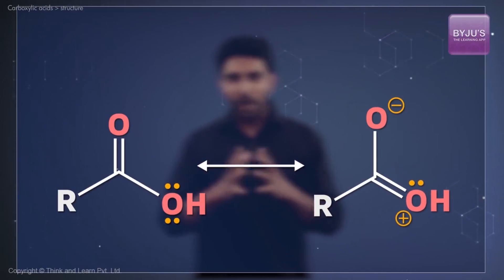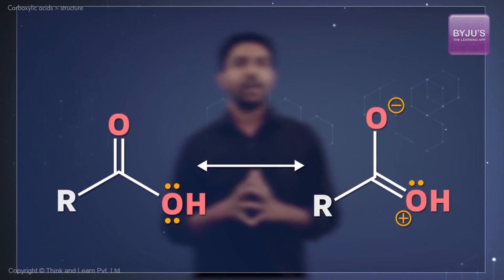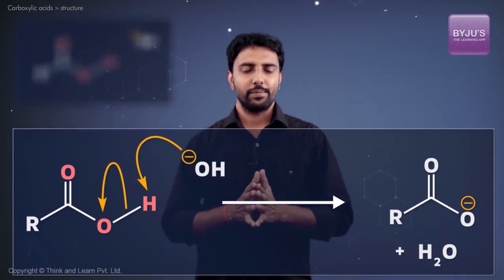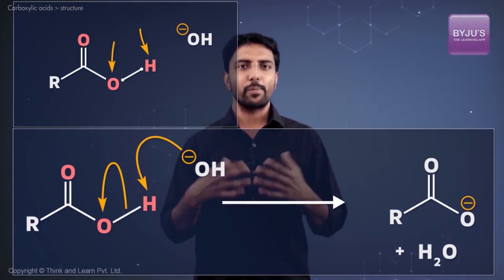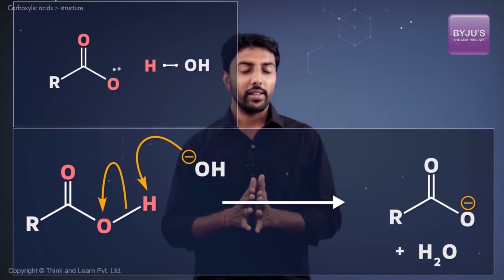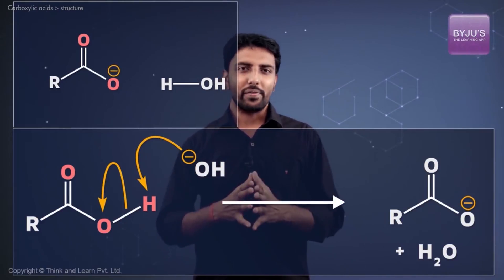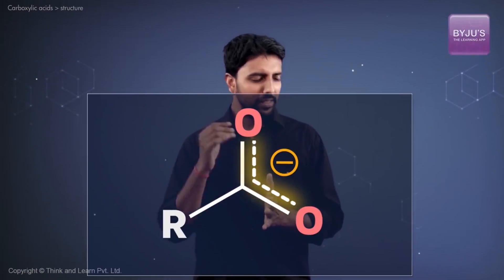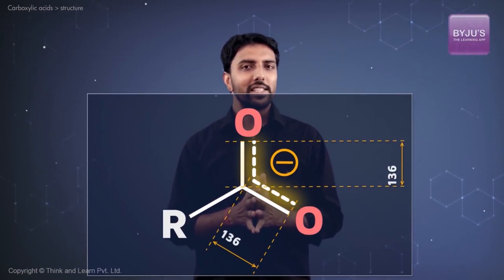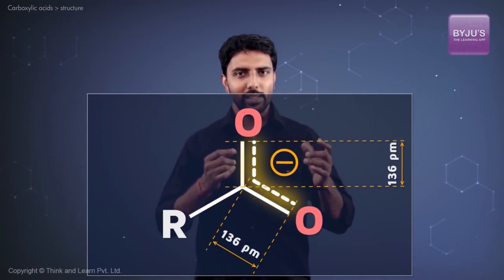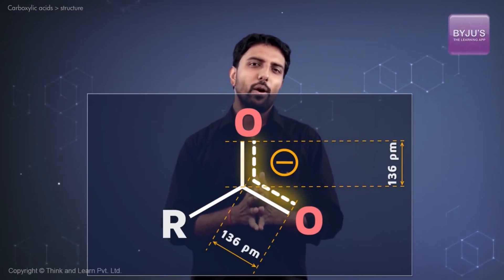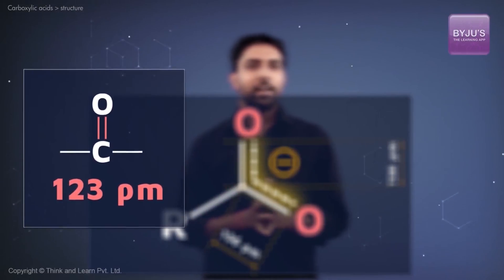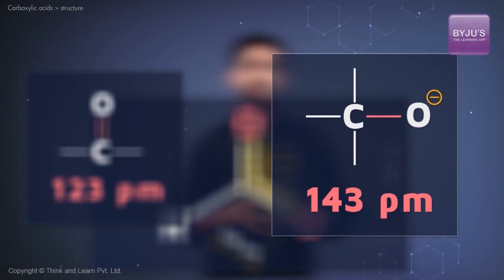In fact, this is why carboxylic acids behave like acids in the first place. Take a look at this acid-base reaction. When the acid loses its proton, we get water and the carboxylate ion. X-ray crystallography reveals that both the carbon-oxygen bond lengths in this anion are equal at 136 picometers. This value is bang in the middle of what would be an oxygen-carbon double bond at 123 picometers and a carbon-oxygen single bond at 143 picometers.